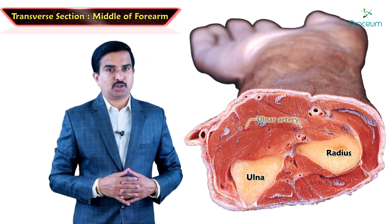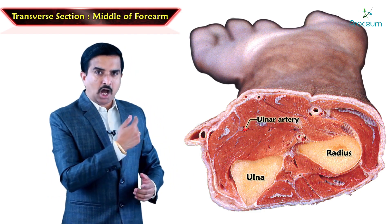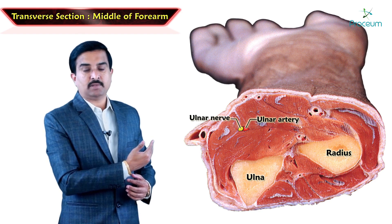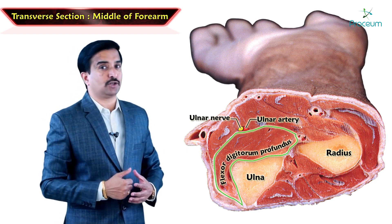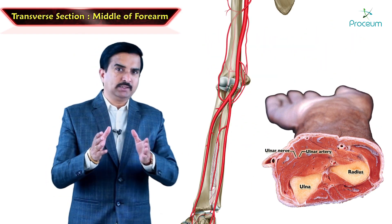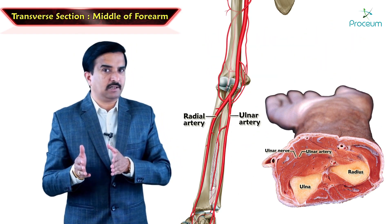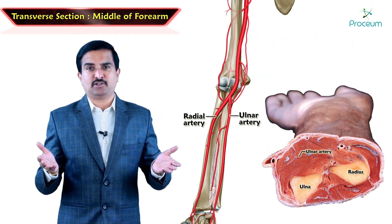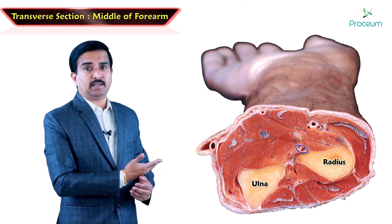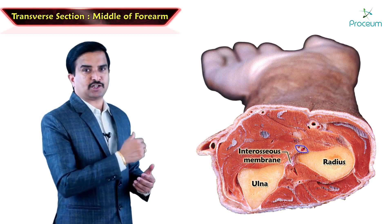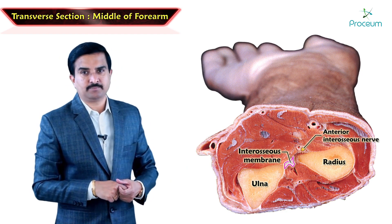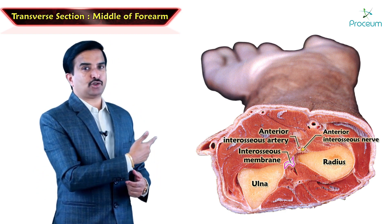The artery seen on the lateral side of the ulnar nerve, in relation to the flexor digitorum profundus, is the ulnar artery. The radial as well as the ulnar arteries are the terminal branches of the brachial artery. Another neurovascular bundle is seen in front of the interosseous membrane, which contains the anterior interosseous nerve and the anterior interosseous artery.